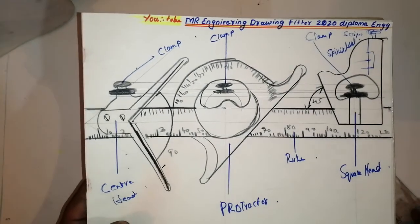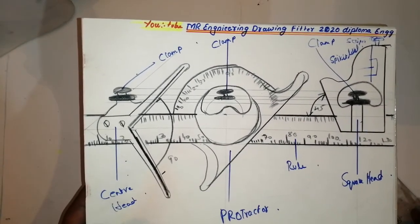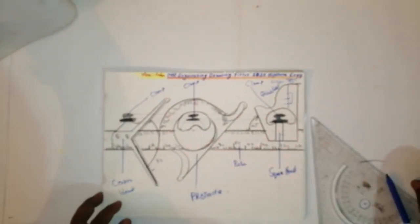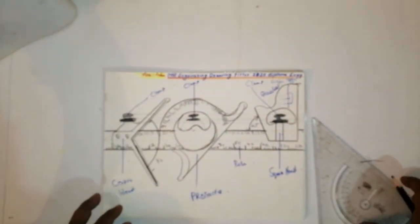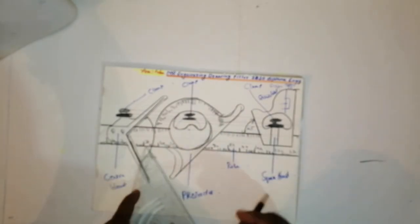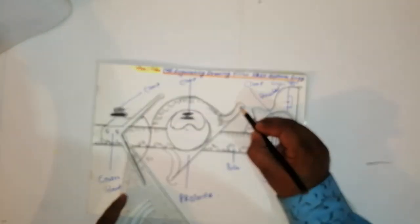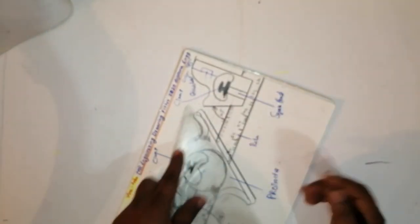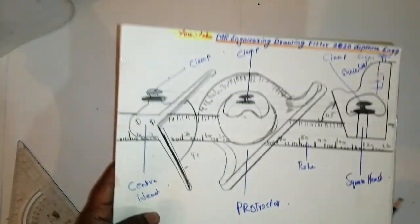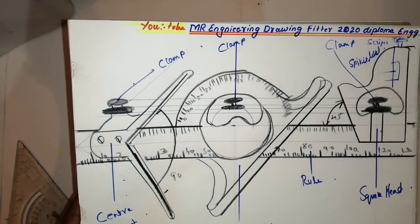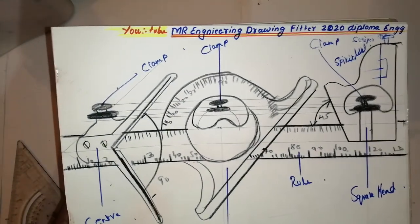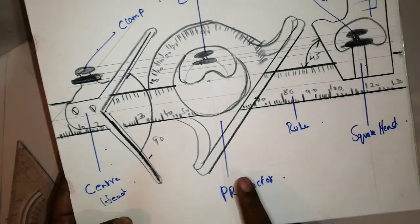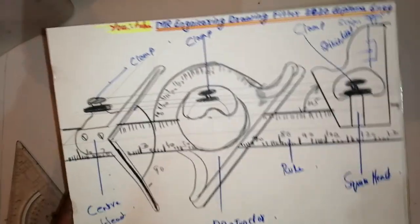This is a combination set — it is very important in theory or any drawing. This is the combination set. This is a combination of three types: center head, protractor head, and square head. There are three types. I have written everything.